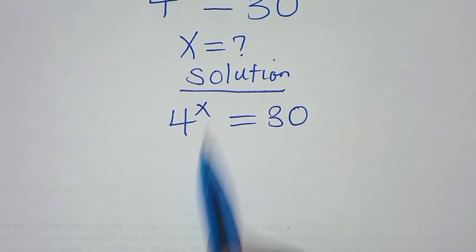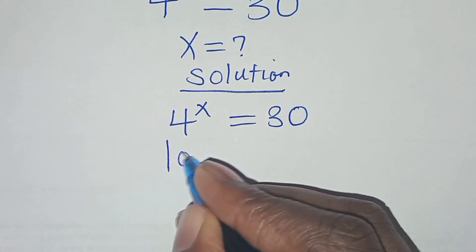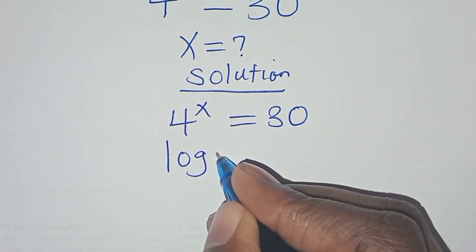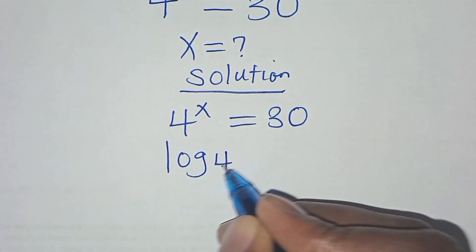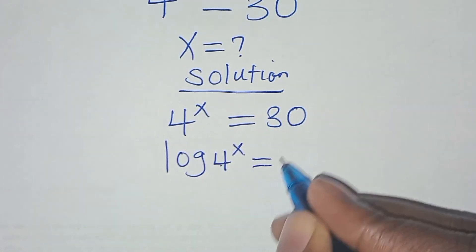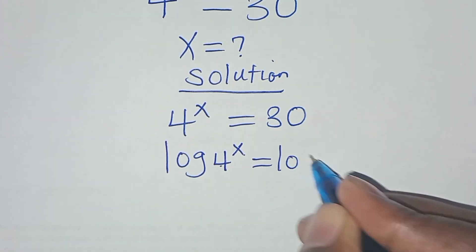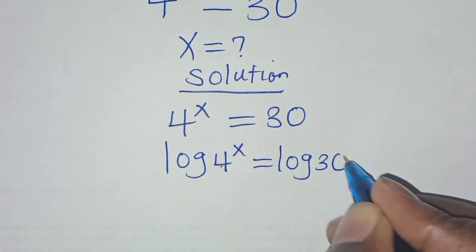To solve for the value of x, we introduce logarithm on both sides. So here we'll have log 4 to the power x equals log 30.